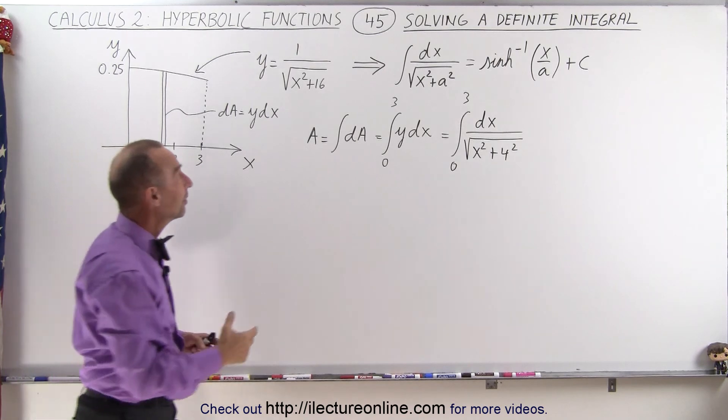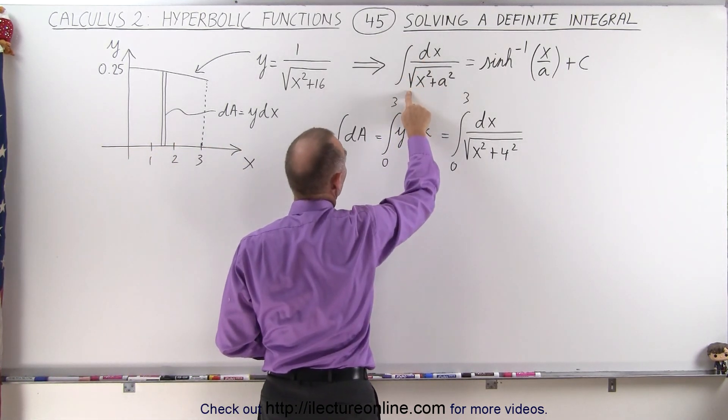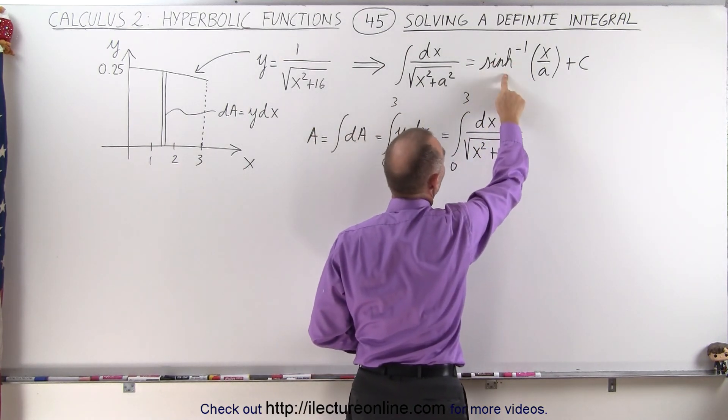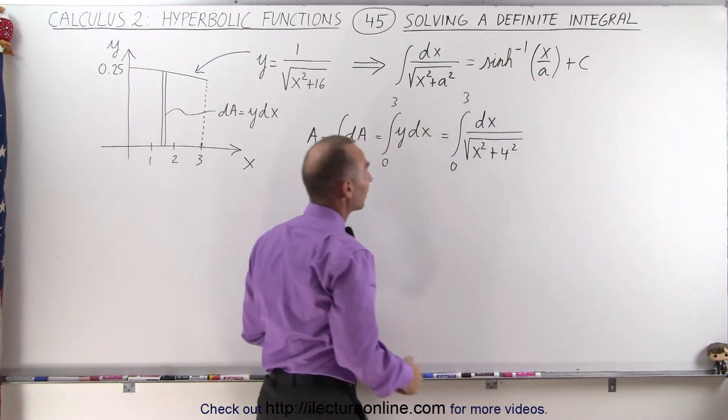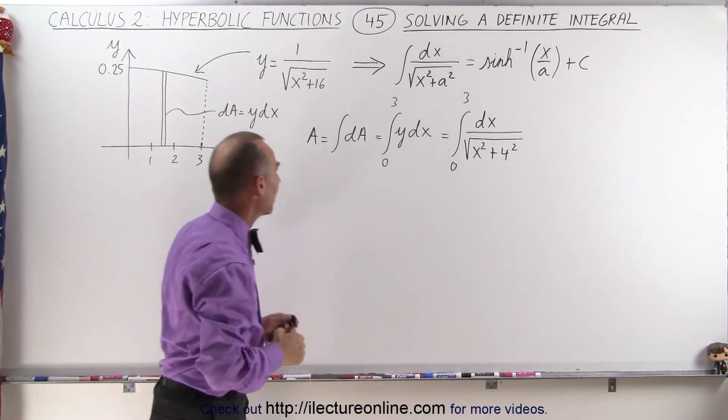Now we understand that if we write it in a general format, the integral of dx over the square root of x squared plus a squared is indeed the inverse hyperbolic sine of x over a. Of course, if it's an indefinite integral, you need the constant of integration, but with limits you do not.